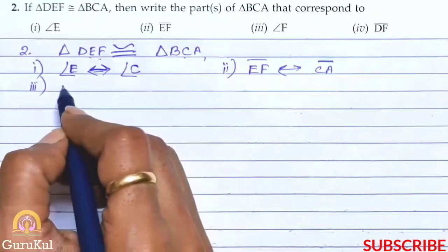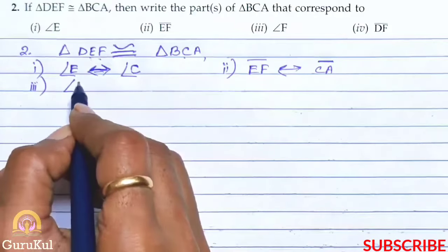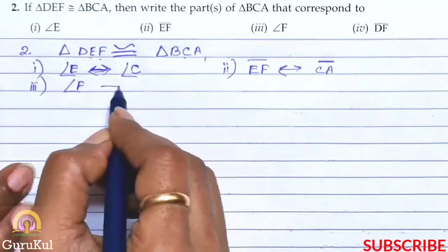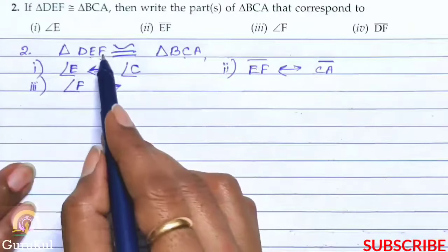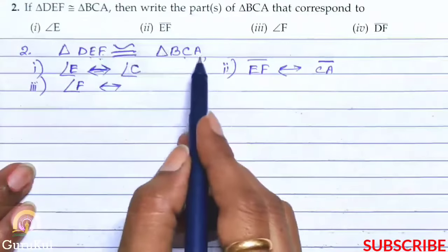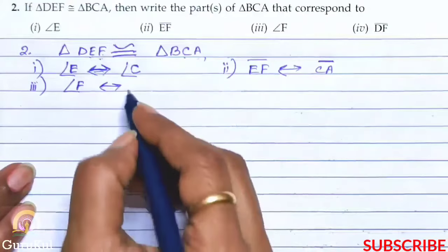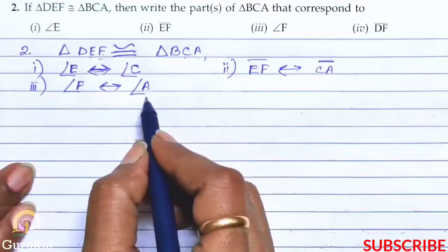Third one, it says angle F. Corresponds to what? So angle F is where? The third one. So what is the third one here? A. That means angle F corresponds to angle A.